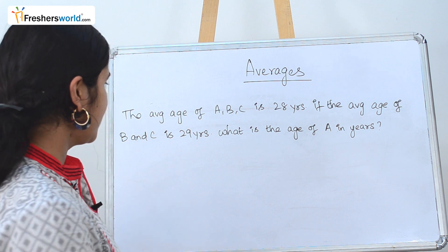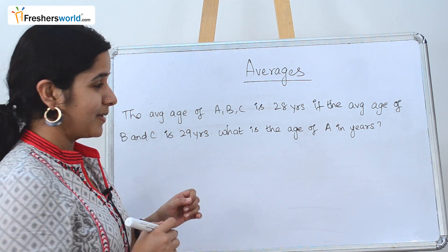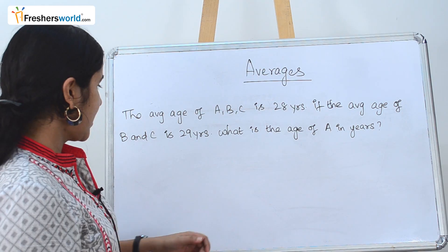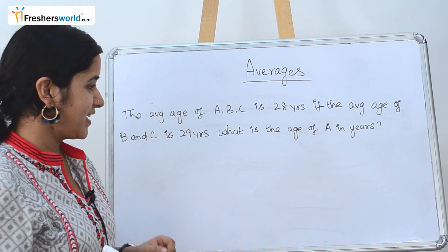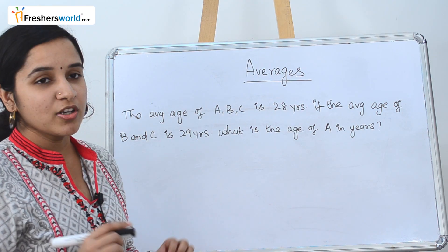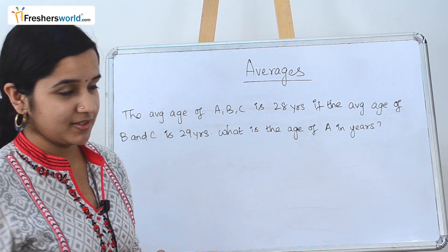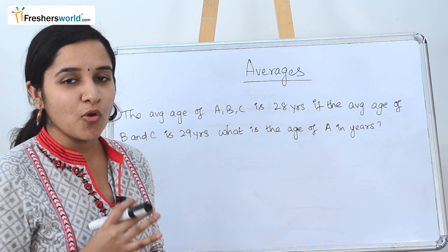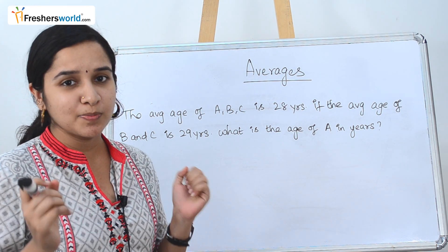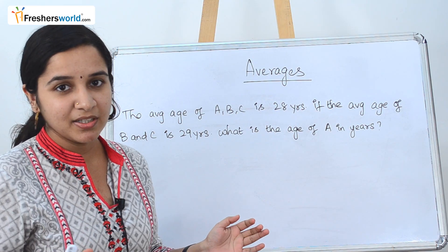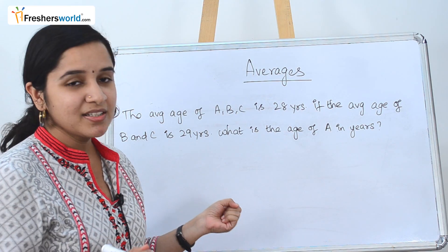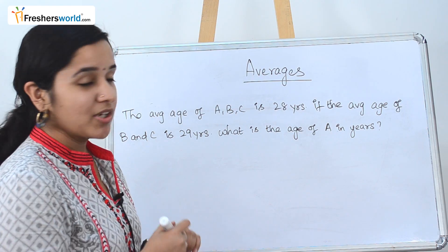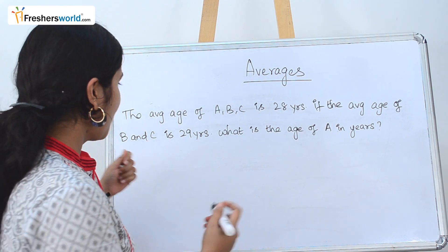The first question is: the average age of A, B, and C is 28 years. If the average age of B and C is 29 years, what is the age of A in years? In averages it's more like an ages concept where you have to split the question and understand it better. The answer is always inside the question. So let's split the question first.